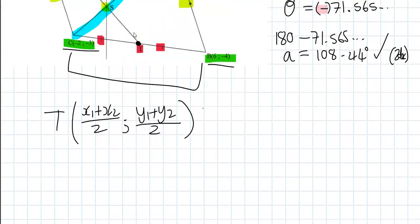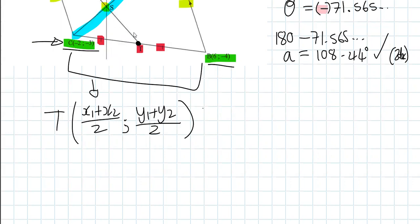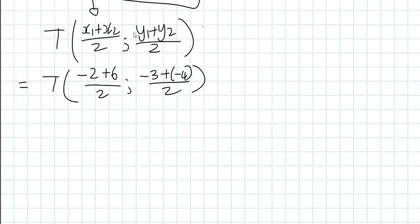Let's start with (-2 + 6) all over 2, and we could do (-3 + (-4)) all over 2. That's our T. This is 4 over 2, so 4 over 2 is 2. And on this side we have -7, since -4 minus 3 is -7, so -7 over 2. Therefore T is (2, -7/2).